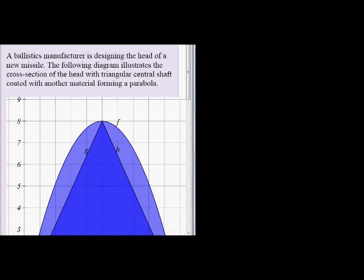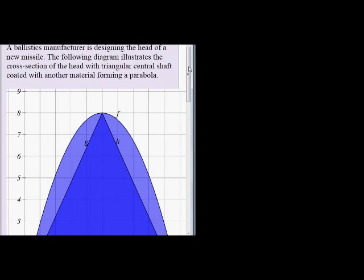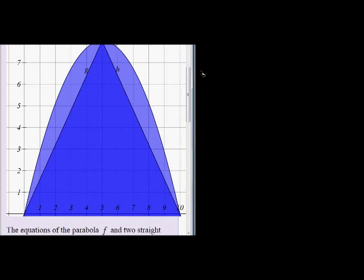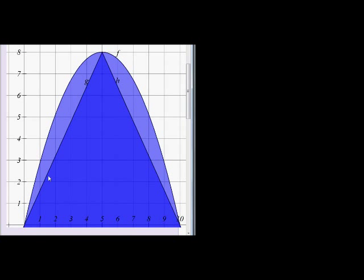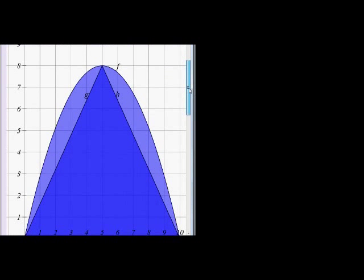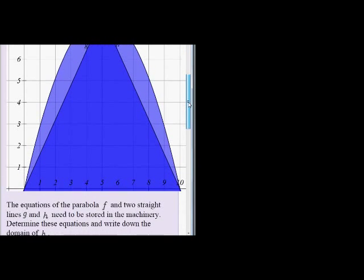They say a ballistics manufacturer is designing the head of a new missile. The following diagram illustrates the cross-section of the head of the triangular central shaft coated with another material forming a parabola. So here they say that's the missile, the cross-section of a missile coated with another material that forms a parabola. Now again, don't worry if you didn't get this whole statement. Let's just go and look at the question. Don't be intimidated.